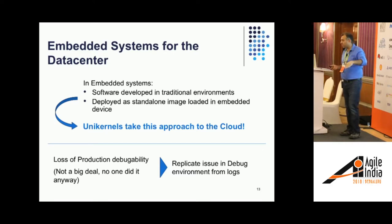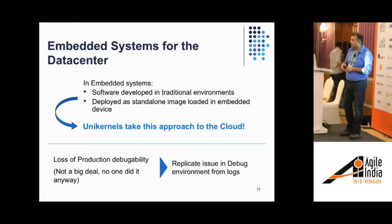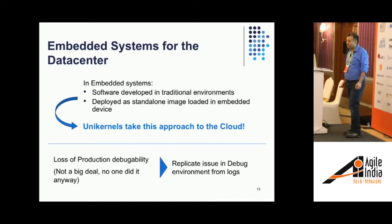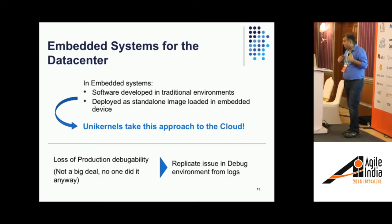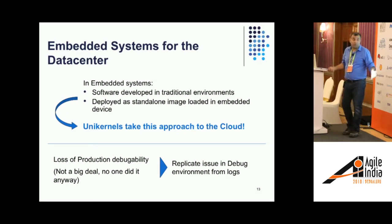The problem with that approach — even in embedded systems — is you have no visibility of what is happening in your actual production environment. During development and testing you have all the tracing and emulators, but when you put it on the device, that's the end. In embedded systems, you take the issue, replicate it in your debug environment, and figure out what's happening. Some people consider this a drawback to unikernels, but personally I don't, because I've never come across someone who does live debugging in production.